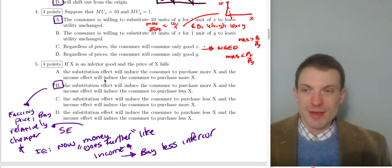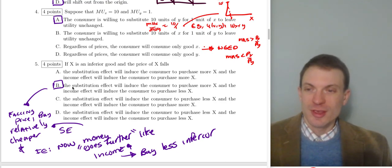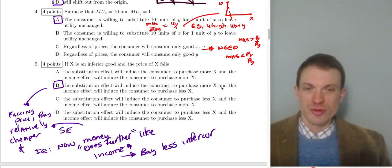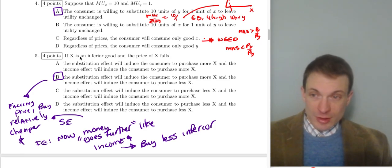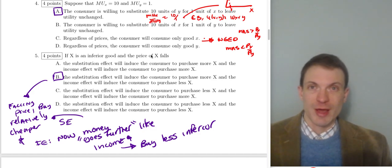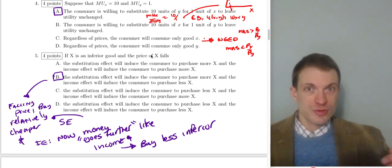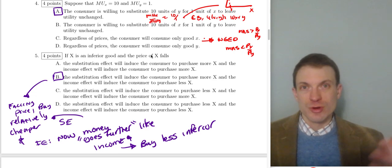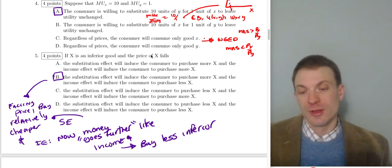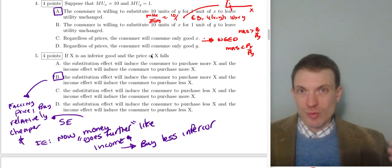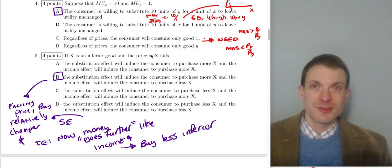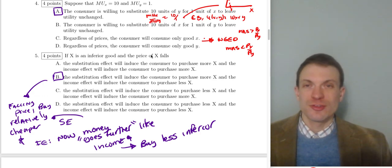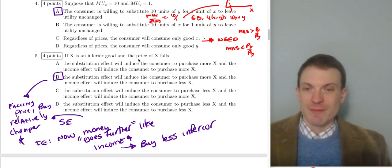Question five: if x is an inferior good and the price of x falls, the substitution effect induces the consumer to purchase more x, while the income effect induces the consumer to purchase less x. As the price of x falls, it becomes relatively cheaper so you substitute towards it. At the same time, because the good is relatively cheaper, your purchasing power rises — like an increase in wealth. But becoming wealthier means you buy less of the inferior good, so the income effect leads to less x.